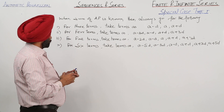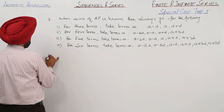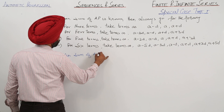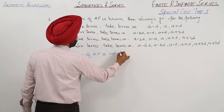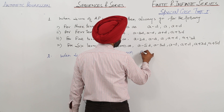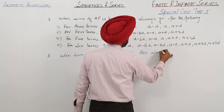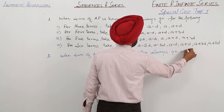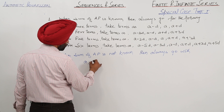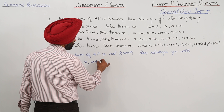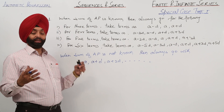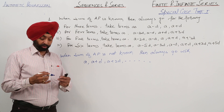Number two: when the sum of AP is not given, always go with the general term form — a, a plus d — because certain other conditions will be given for solving the question. That was a brief investigation of the special types of cases.